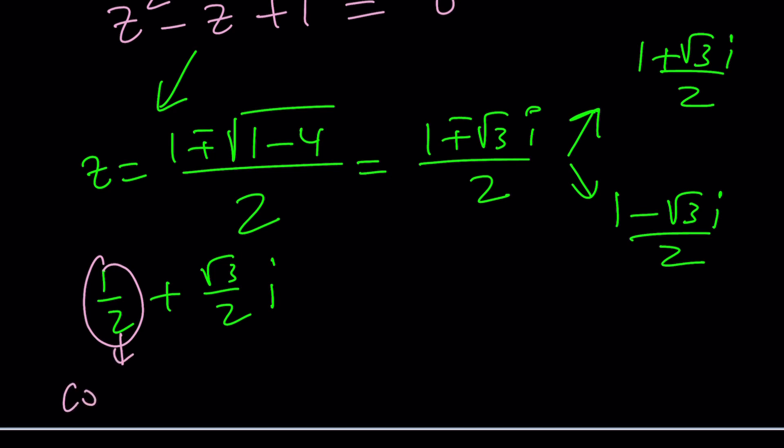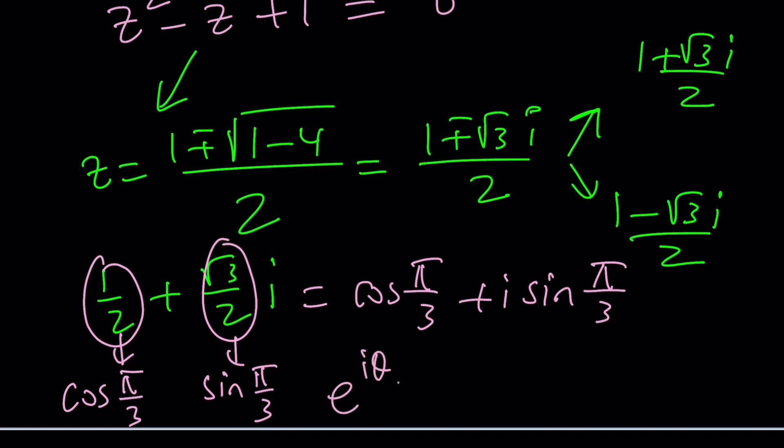And I just want to tell you something. This is cosine of pi over 3, which is 60 degrees. And this is sine of pi over 3. So this can be written as cosine pi over 3 plus i times sine pi over 3. Uh-oh, Euler's formula. What am I talking about? Well, I'm talking about the following. e to the i theta is cosine theta plus i sine theta. Make sense? So we can write this as e to the power i pi over 3.